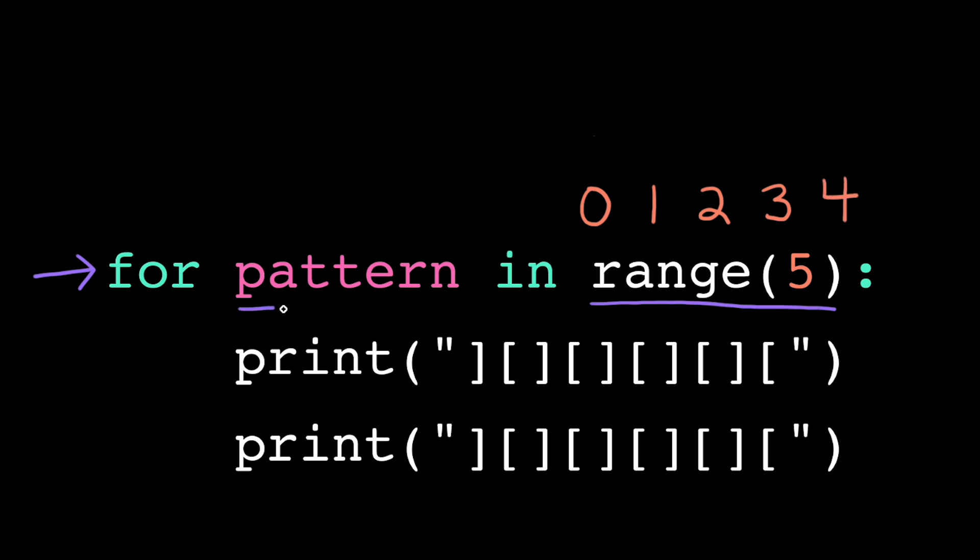On each iteration, the computer will set the loop variable to the next value in the range until it reaches the end. Then it terminates the loop.